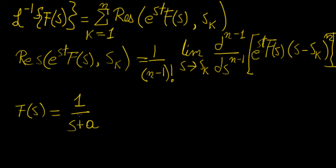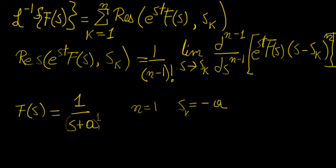The first thing we need to do is find what the poles are in the function. In this case, the polynomial in the denominator is simply order 1, because (s plus a) is the same as (s plus a) to the power of 1. We cannot simplify this further. So the pole is of order 1, there's only one of them, and the value is going to be s equals minus a. This is going to be our value of s_k.